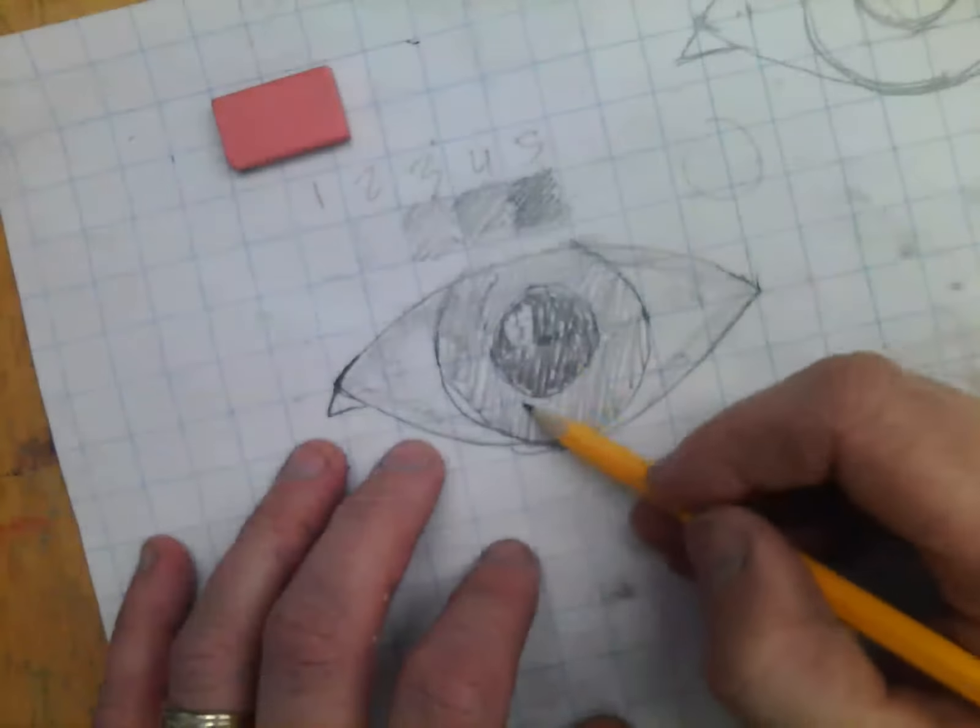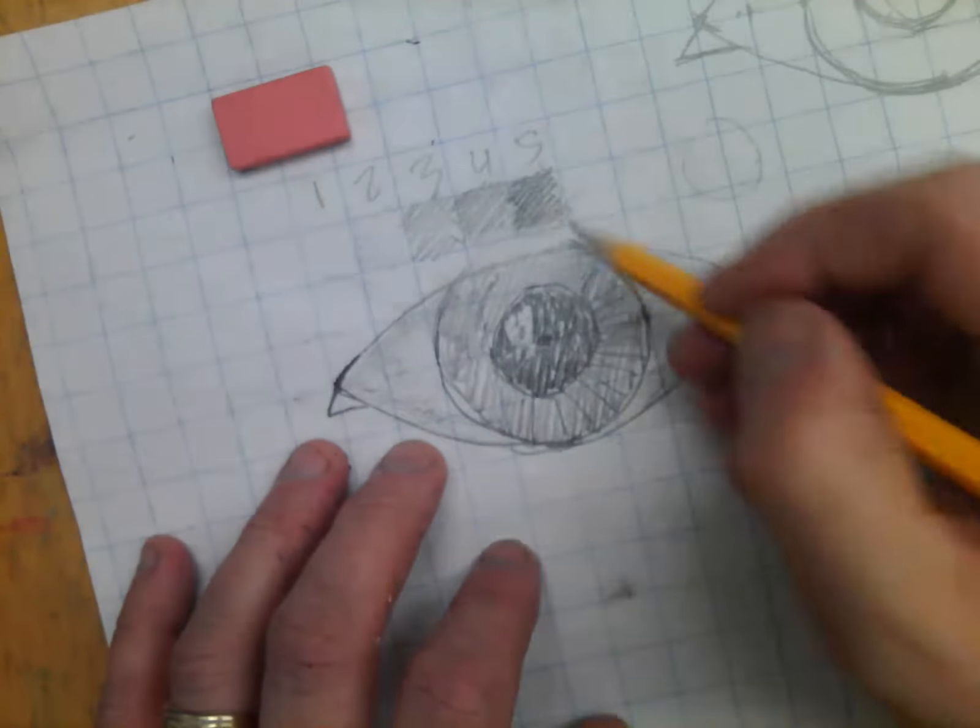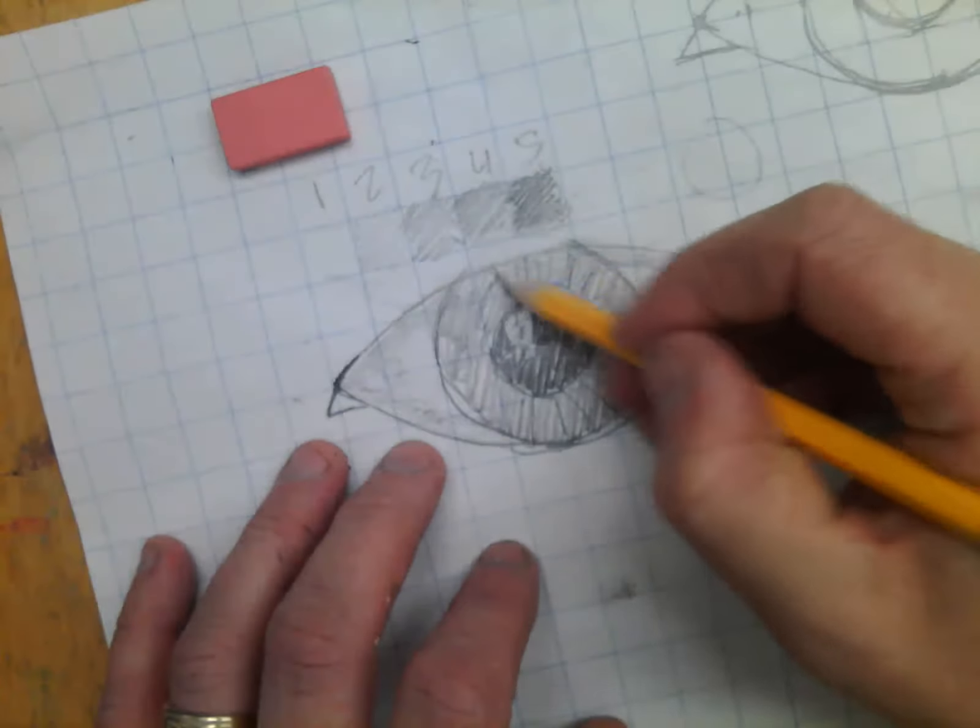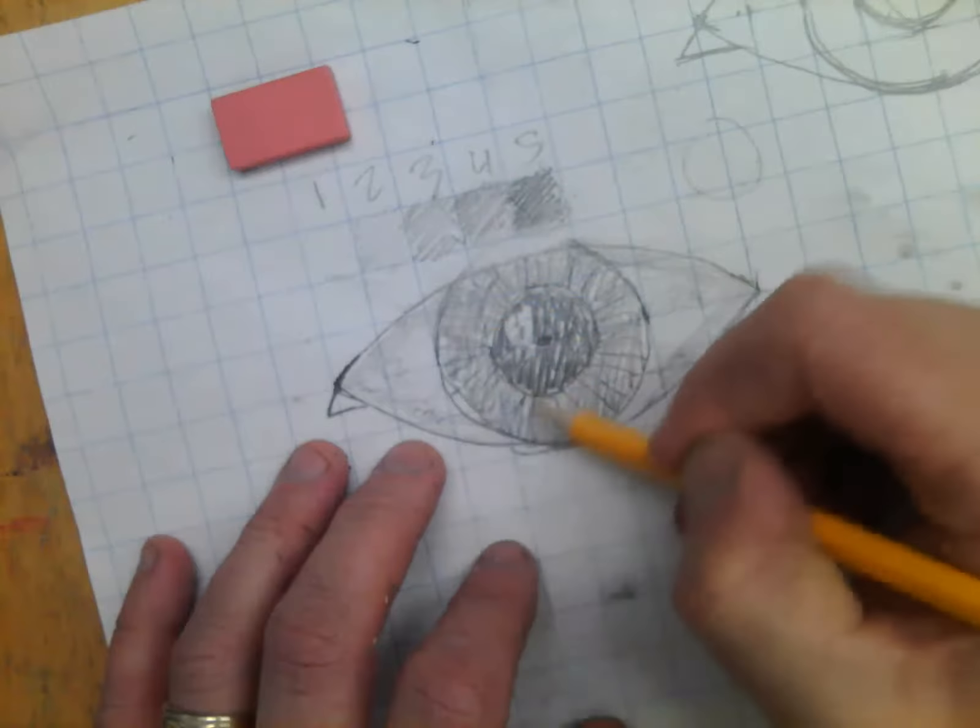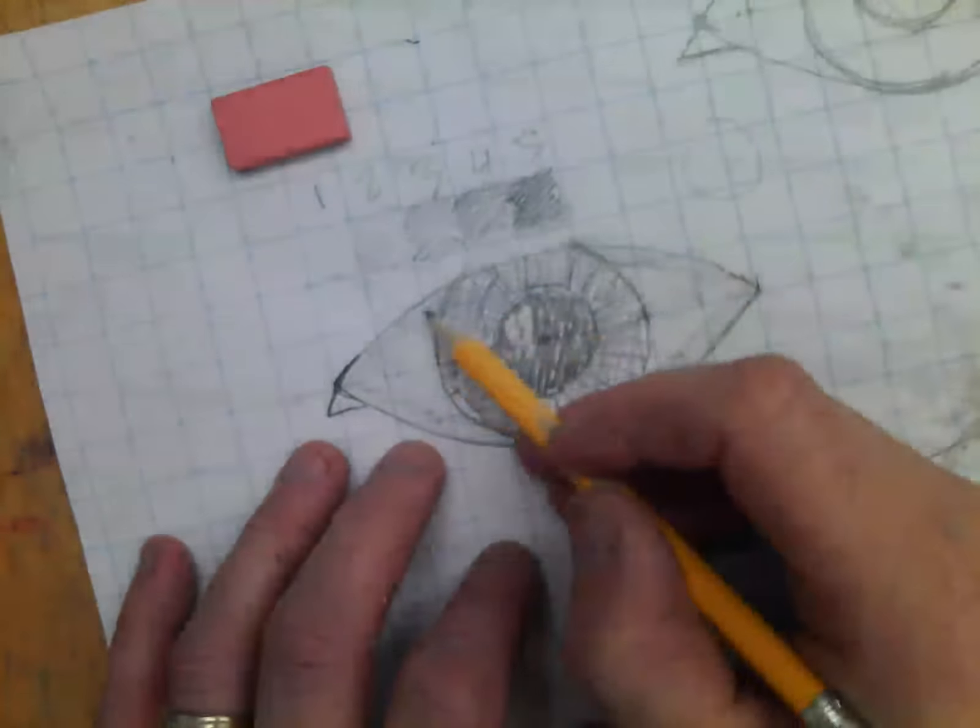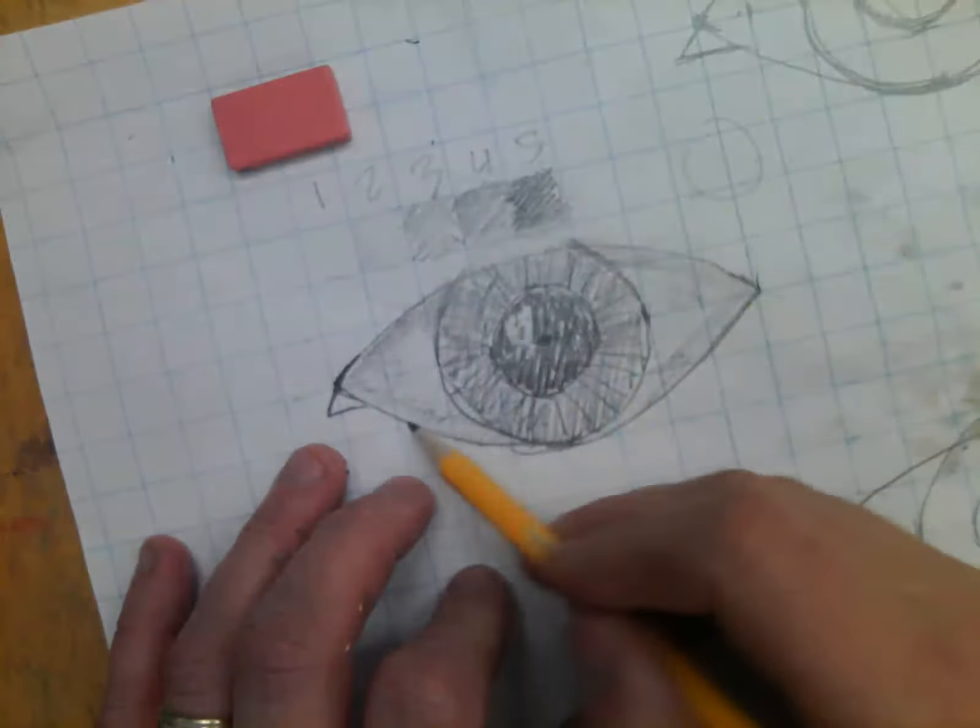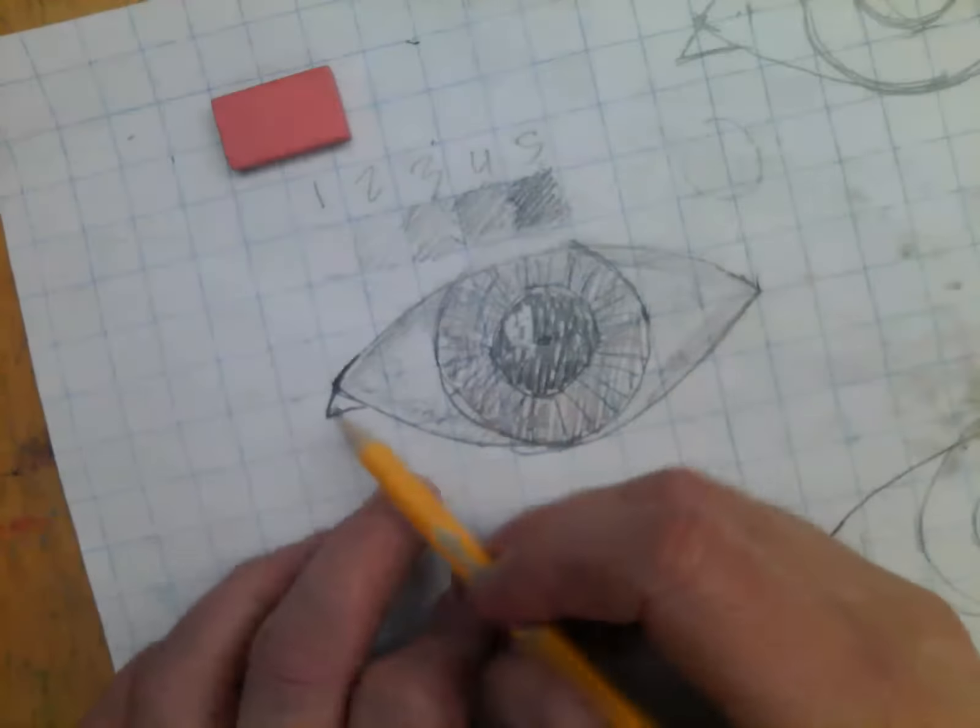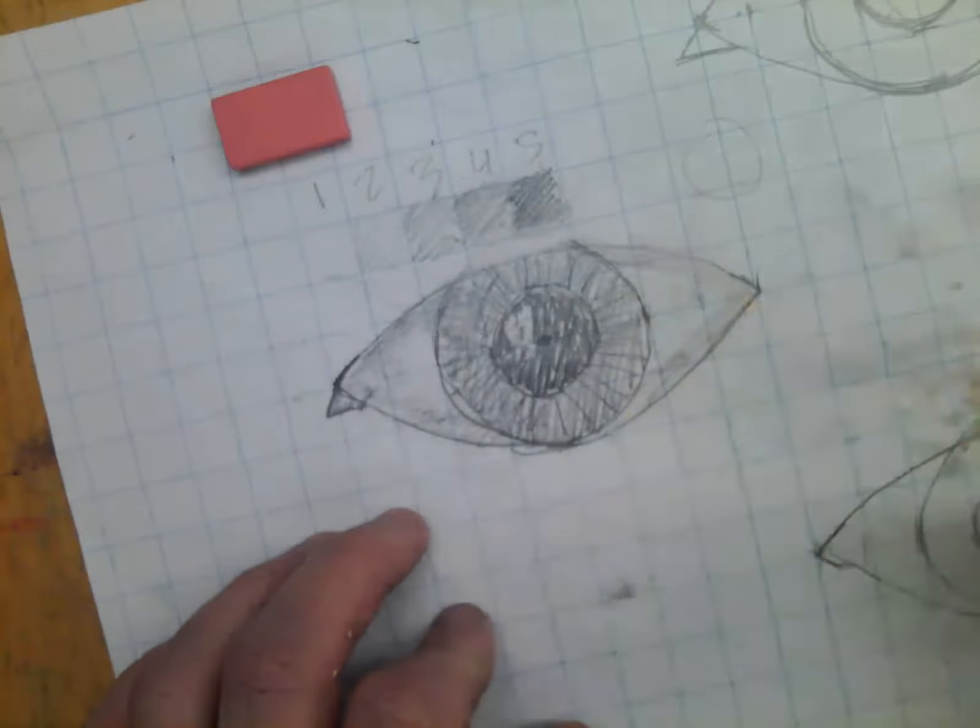Now I can go back in and with the iris, do some lines here. Go around like a wagon wheel. Bicycle spokes. I can darken the three areas a little more. And I'm just doing little touch-ups. Also, the tear duct would probably be around a three in value. Three or four.